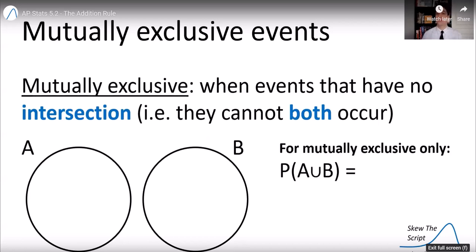So for mutually exclusive events only, we don't have to worry about double counting because there's no intersection. The probability of A or B is always simply the probability of A plus the probability of B.